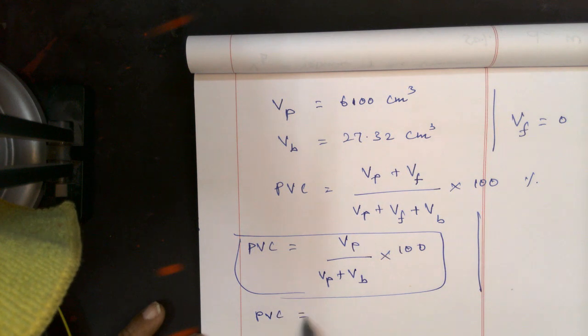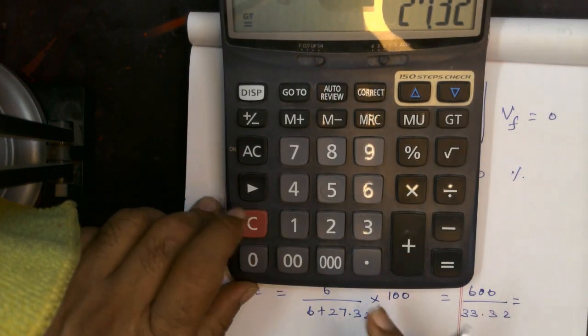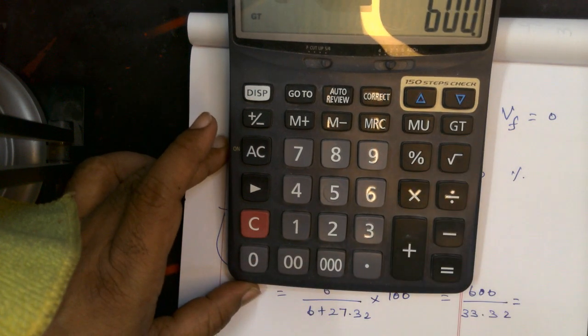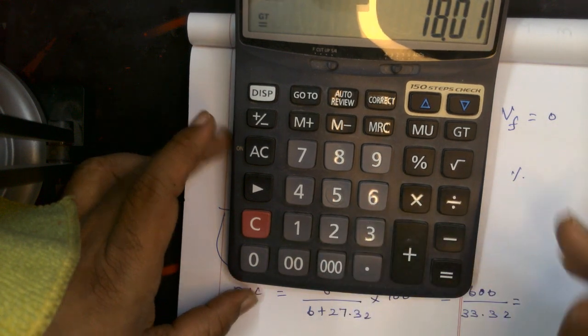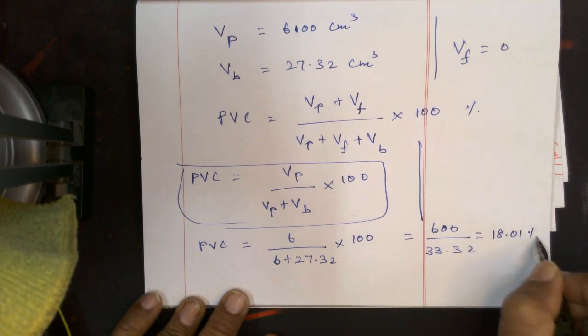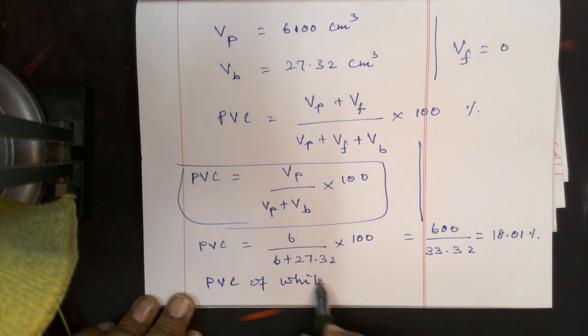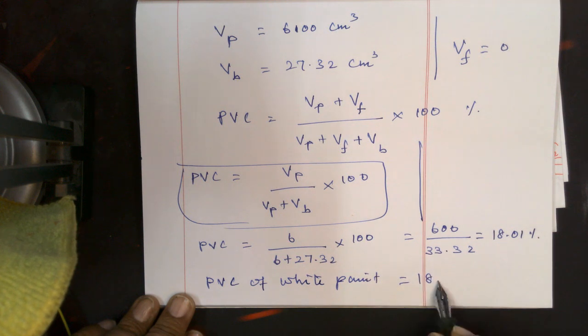Now we will work out the pigment volume concentration. What is the pigment volume? 6 ml divided by 6 plus 27.32 into 100. It means 600 divided by 33.32. That is equal to 18.01%. This is the pigment volume concentration of this paint, white paint. That is 18.01%.